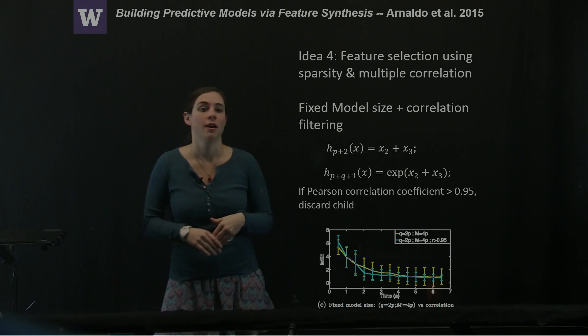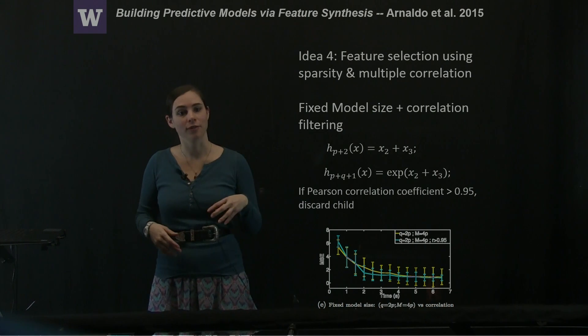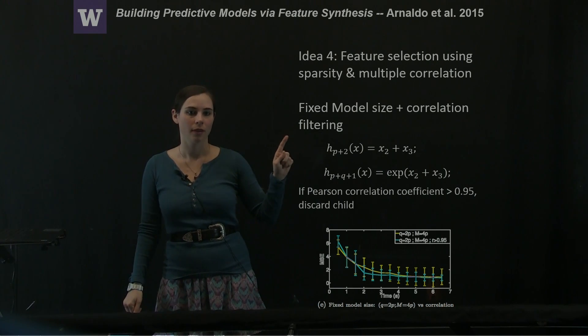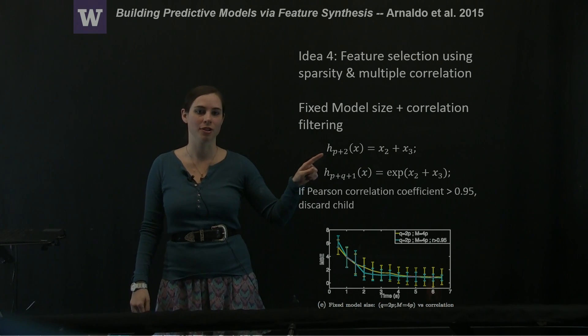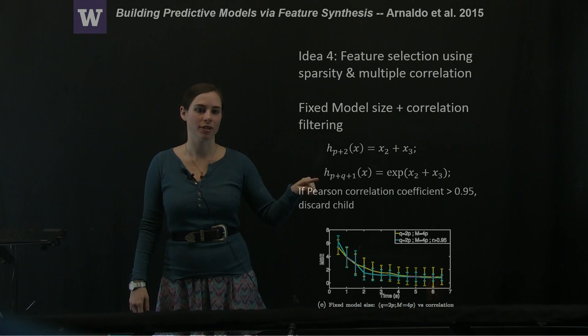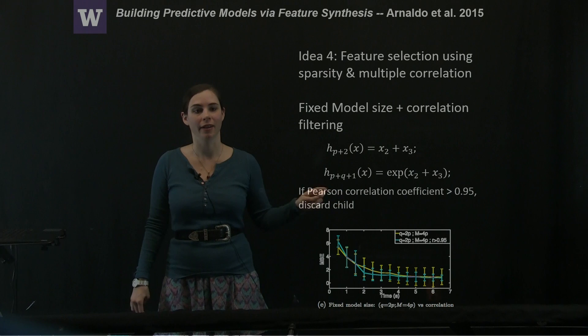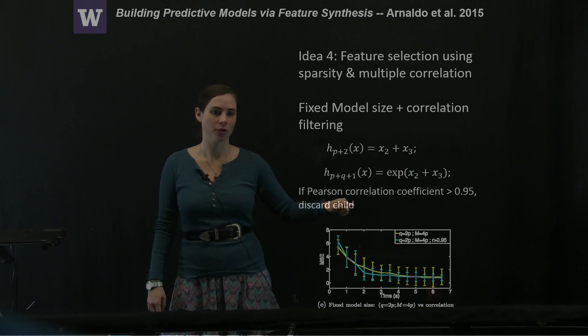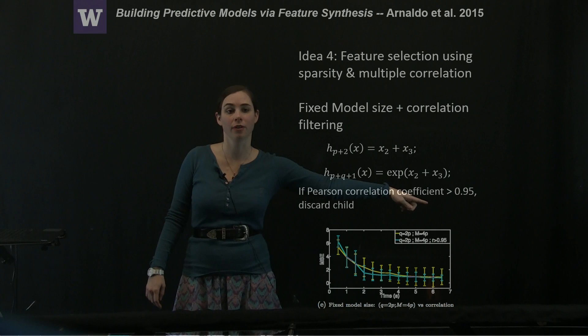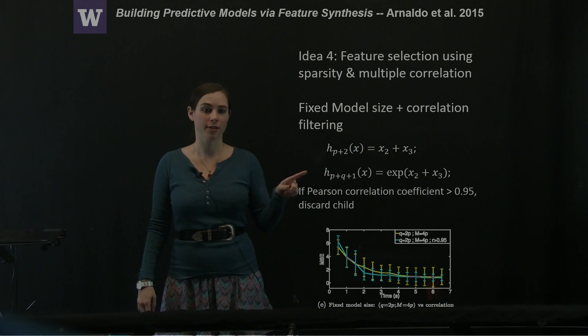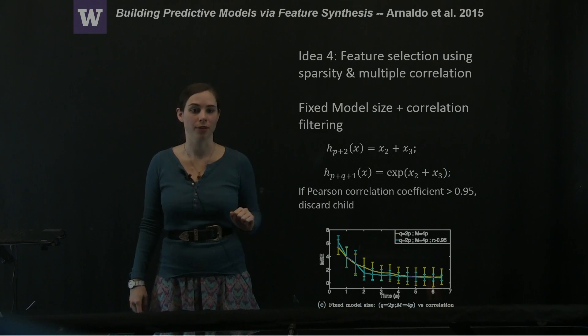So in order to address this, the authors add a correlation filtering. They say if I have a feature from generation x, and in generation x plus 1, I add a new feature, but these two features are very highly correlated, in this case they use the Pearson correlation coefficient, so if that's greater than 0.95 between these two features, then they're going to discard the new one and only keep the old one.